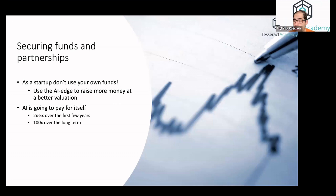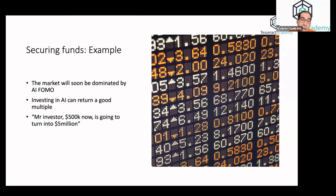With regards to securing funds and partnerships, I think that as a startup, you shouldn't use your own funds most of the time. You need to use the AI edge to raise more money at a better valuation. I think that there is a lot of FOMO now around AI. It's a very good opportunity to position your business in the right way to demonstrate how AI is going to help the business's valuation. This is going to make investor conversations much easier. If you say, hey, Mr. Investor, we need half a million to develop a solution for this. This is how it affects our internal KPIs and our clients KPIs. You should be able to see 5x over the next round and 100x over the long run. This is how you should really position it.